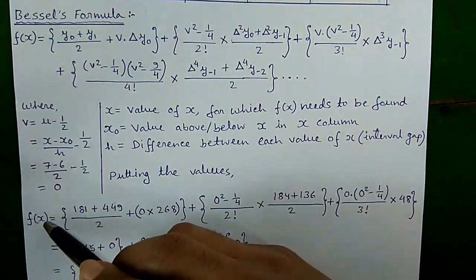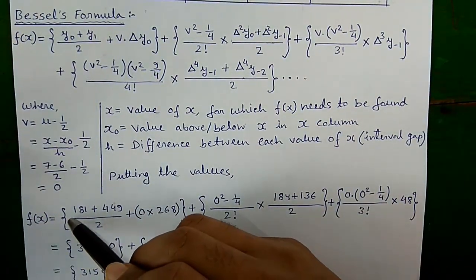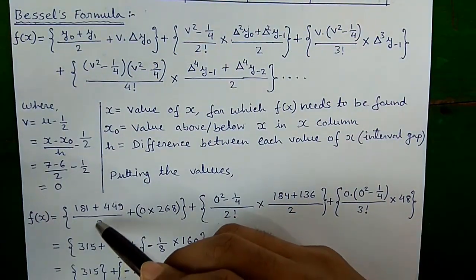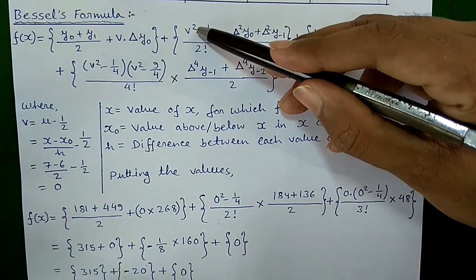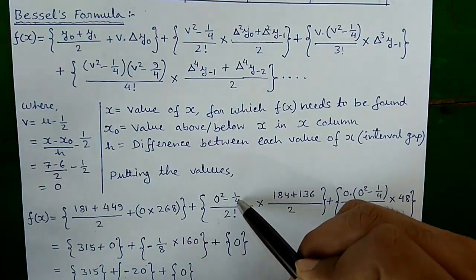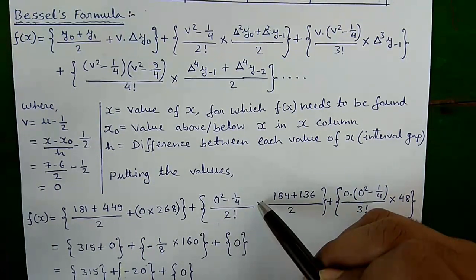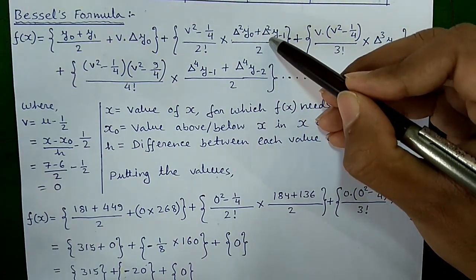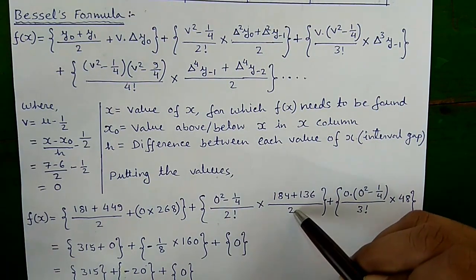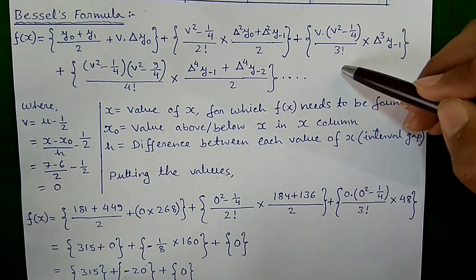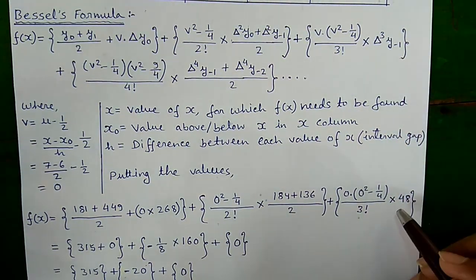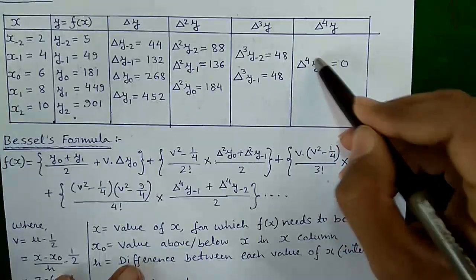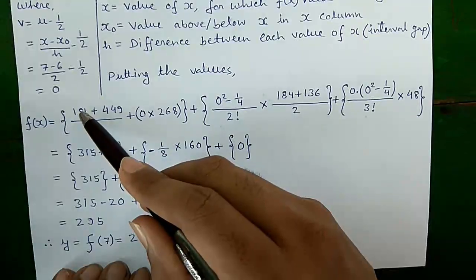Since v = 0, let's substitute values into Bessel's formula. f(x) = (y₀ + y₁)/2 = (181 + 449)/2, plus v·Δy₀ = 0·268, plus (v² − 1/4)/2! · (Δ²y₀ + Δ²y₋₁)/2 = 0 · (184 + 136)/2, plus v·(v² − 1/4)/3! · Δ³y₋₁ = 0·(0 − 1/4)/6 · 48.